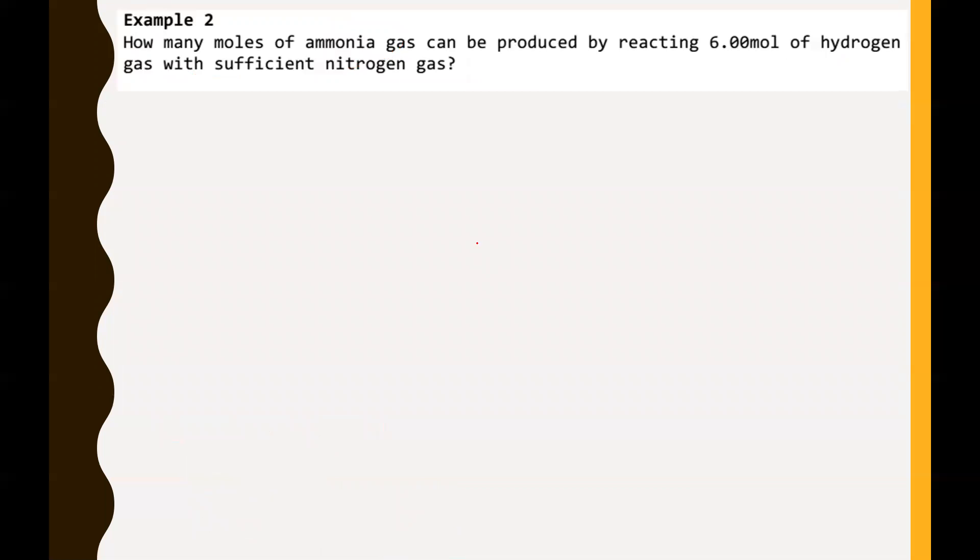Example two. How many moles of ammonia gas can be produced by reacting this many moles of hydrogen gas with sufficient nitrogen gas? We don't care about how much nitrogen gas we have. We're just reacting this much of hydrogen and we're looking for how many moles of ammonia are produced. You can pause the video right here and give this one a shot on your own.